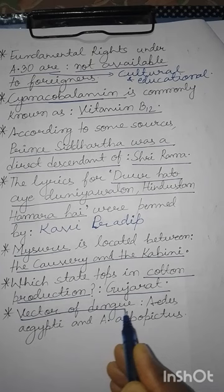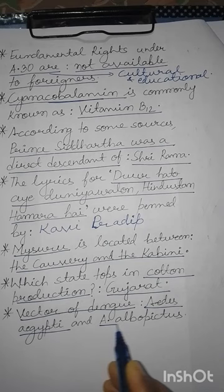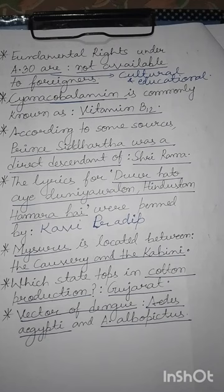The vector of dengue is Aedes aegypti and Aedes albopictus. Dengue virus का वाहक कौन है? Aedes aegypti और Aedes albopictus नाम के मच्छरों की प्रजातियाँ जो हैं, वो डेंगी या dengue virus के वाहक होते हैं।